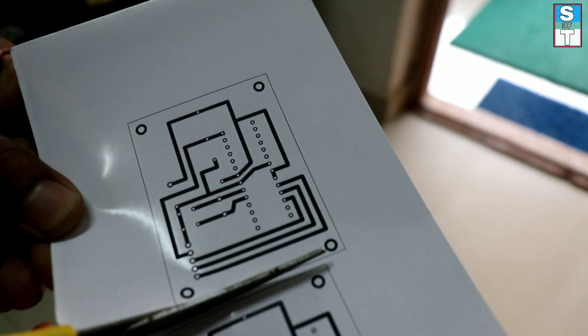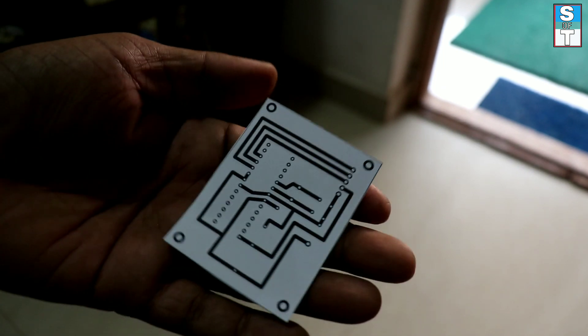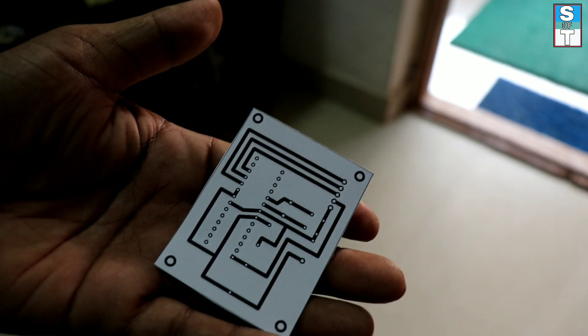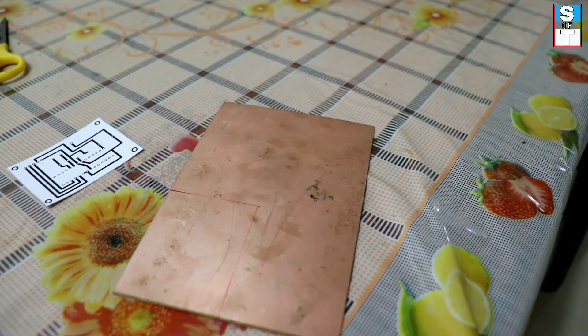Cut the printed part only and remove the other part of paper. Then we are going to cut the PCB to the suitable length.